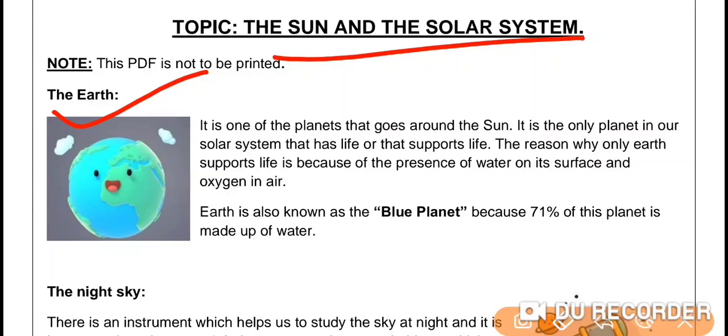It is one of the planets that goes around the sun and this is the only planet which has life. How? Because our Earth has water and air. Yes, because of the presence of water and air, life is possible on Earth.